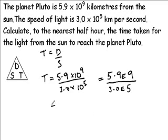And if we carry that out we get an answer of 19,666 and 2 thirds. Now the unit for time is taken from the units used in the question. Now our speed was measured in kilometres per second so the unit for time is seconds.